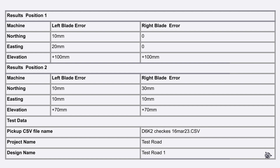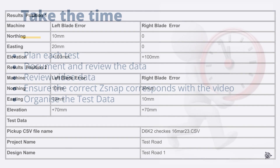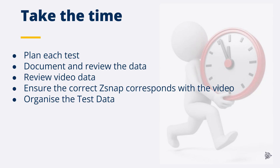Any additional data, including pickup files, has also been recorded. Take the time while on site to record and organise the data. Incomplete or incorrect data may cause the test results to be inconclusive or invalid, and it may not be possible to diagnose the issue, requiring additional site visits and additional machine downtime. Plan each test. Document and review the data from each test before progressing to the next test while the information is fresh. Ensure the correct Z-SNAP corresponds with the correct survey data. Organise the data from each test in separate folders. Getting accurate test data will save time in the long run.